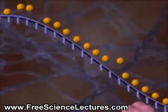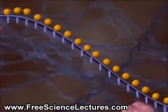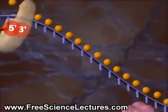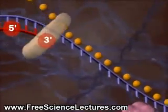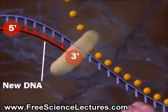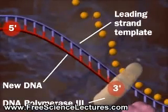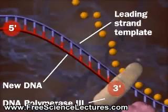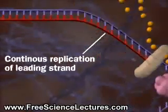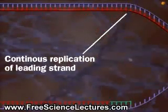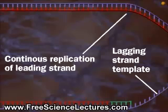One DNA strand encodes the leading strand, which forms from its 5' to its 3' end using DNA polymerase 3. No problem here, but the lagging strand presents problems.